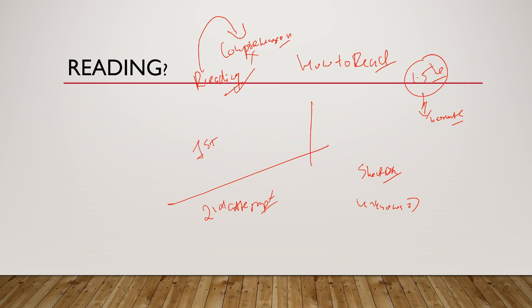Once you have done with your first attempt, unknown words ka meaning check in dictionary mein and write them in your notebook. Also, cross verify ki jo aap ne guess kiya tha uska contextual meaning wo sahih hai ya nahi. Once you are done with this, go for the second attempt. And once you go for the second attempt, ab aap ko sare unknown words bhi patah hai.